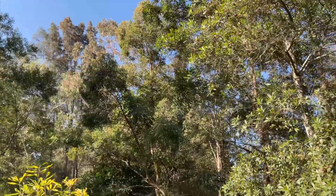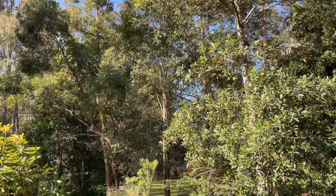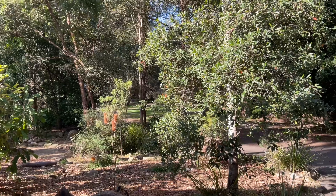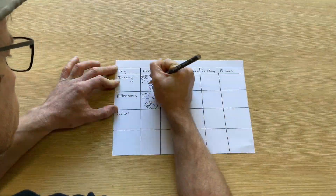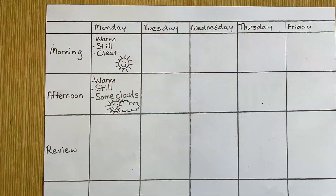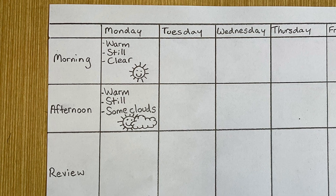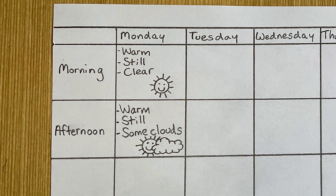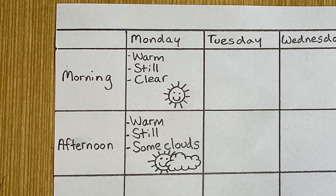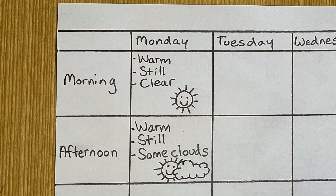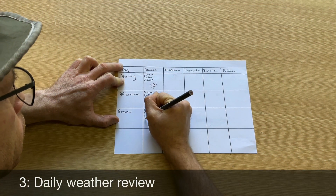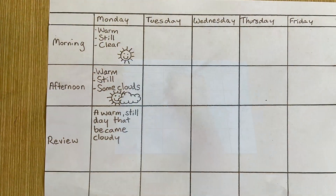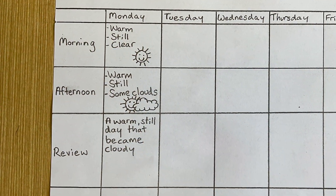How did you go? Remember, it's the afternoon for me where I am, but I can still remember the weather this morning — it was similar to now, but there were no clouds. You are going to record the weather twice a day, every day this week. And then, in the review section, you need to write a short sentence that describes the weather and how it changed during the day.